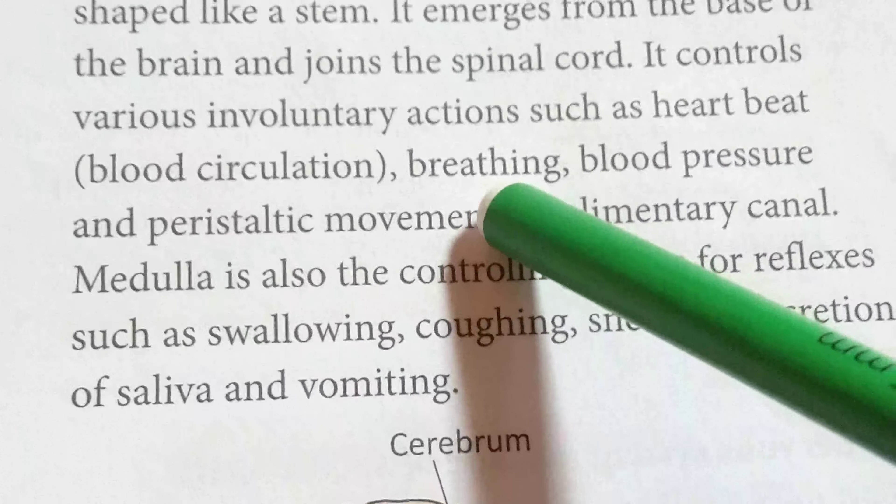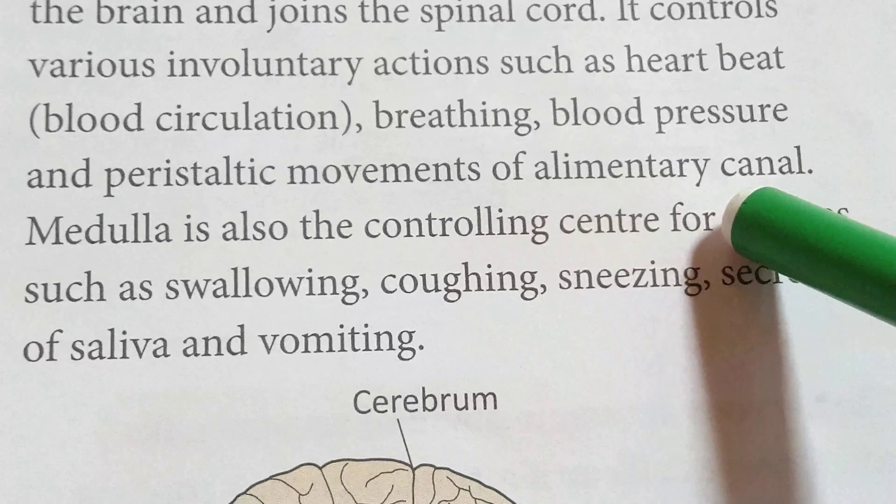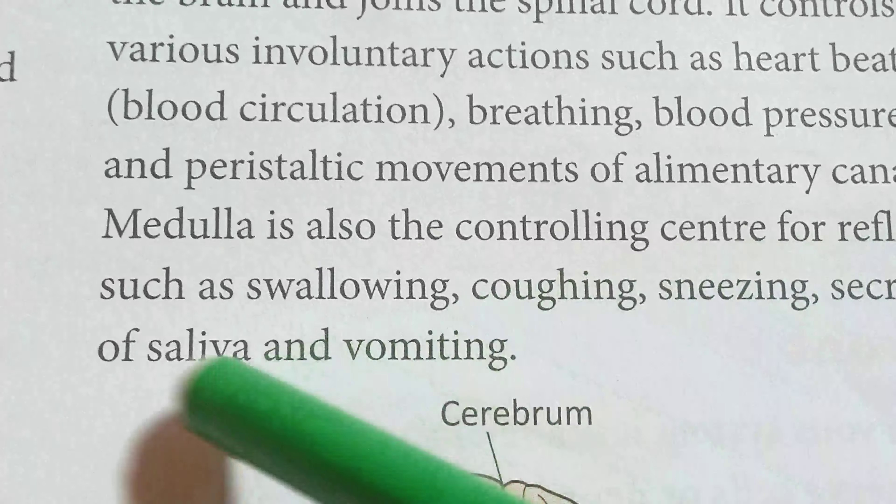The medulla oblongata controls various involuntary actions such as heartbeat, breathing, blood pressure, and the peristaltic movement of the alimentary canal. It is also the controlling center of reflex actions such as swallowing, coughing, sneezing, secretion of saliva, and vomiting.